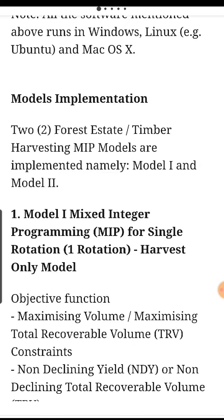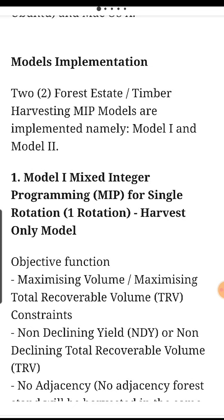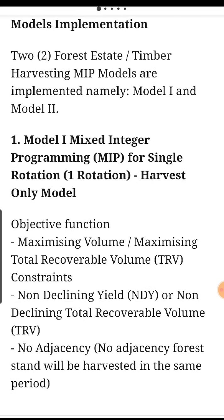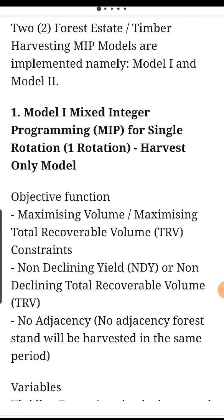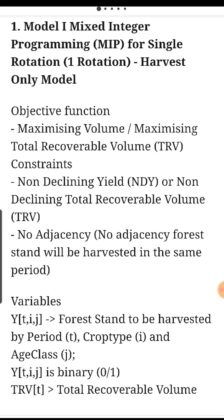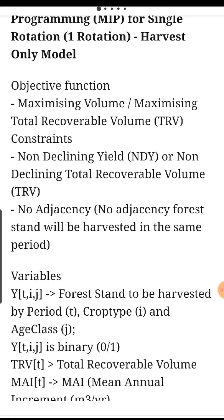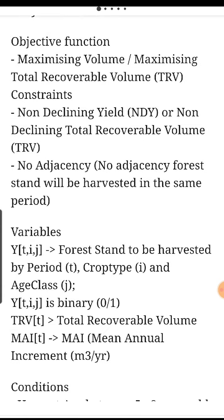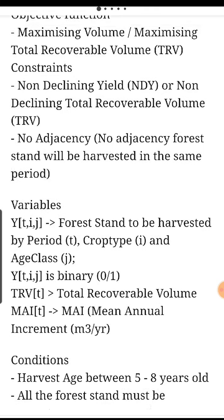Models implementation. Two forest estate timber harvesting MIP models are implemented, namely Model 1 and Model 2. Number one: Model 1 — Mixed Integer Programming (MIP) for single rotation, one rotation, harvest-only model. Objective function: maximizing total recoverable volume (TRV). Constraints: non-declining yield (NDY) or non-declining total recoverable volume.